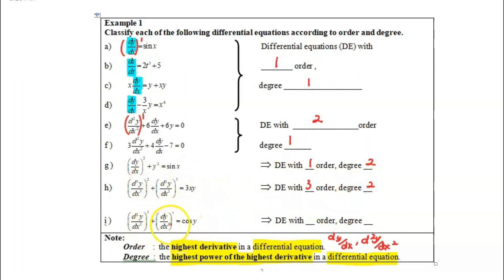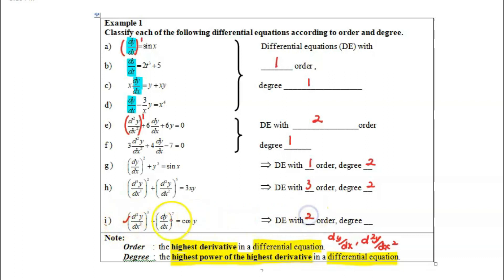For this final equation, dy/dx is the first derivative and d²y over dx² is the second derivative, so the highest derivative is d²y over dx² — second order. The power here is 3, so the degree is 3. This is how we determine the order and degree of a differential equation.